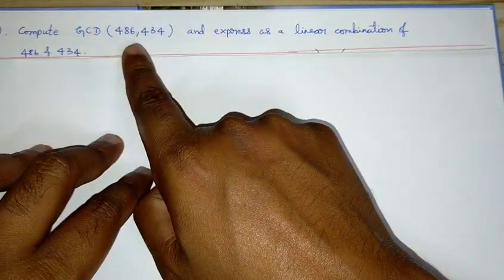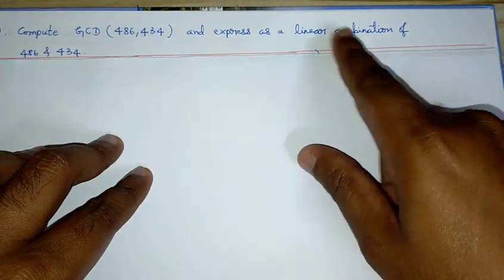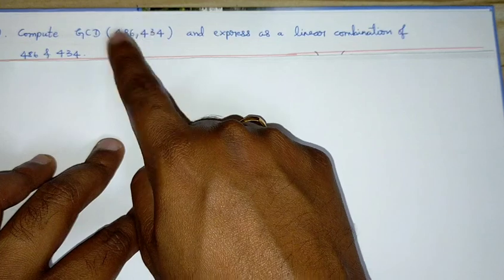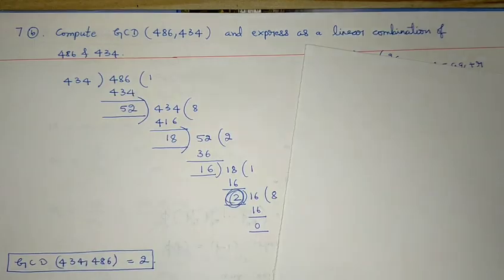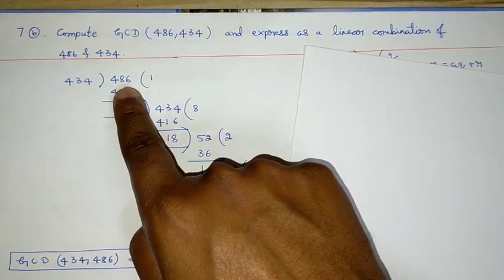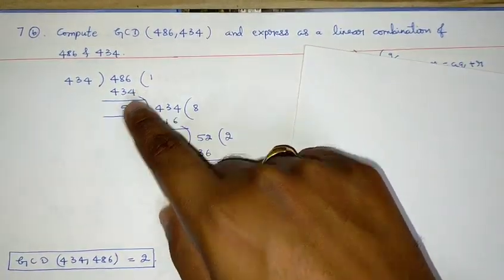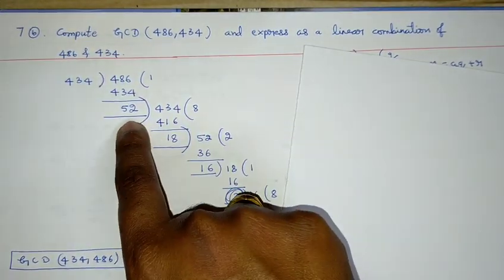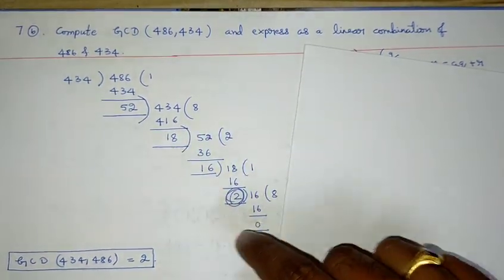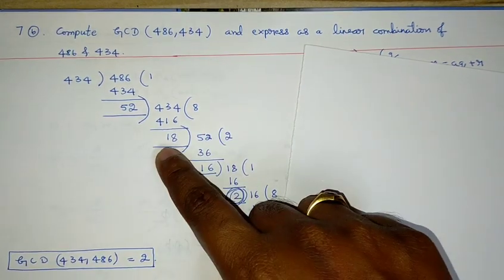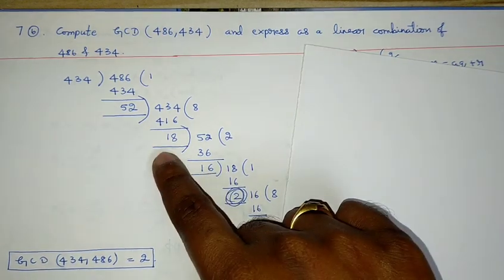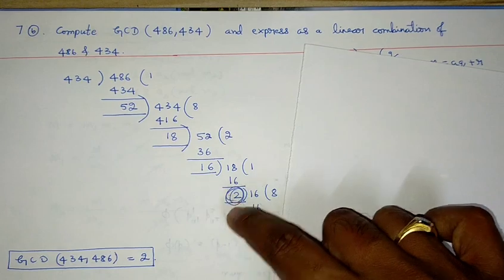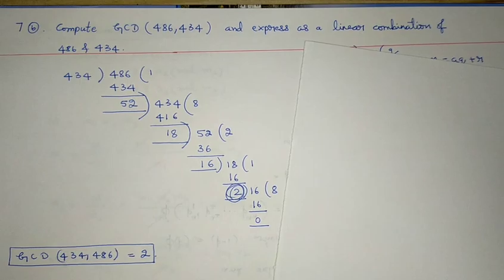Next question: compute gcd(486, 434) and express it as a linear combination of 486 and 434. We perform successive divisions; the last non-zero remainder is the gcd. Dividing 486 by 434: remainder 52. Dividing 434 by 52: remainder 18. Dividing 52 by 18: remainder 16. Dividing 18 by 16: remainder 2. Dividing 16 by 2: remainder 0. So gcd(486, 434) = 2.